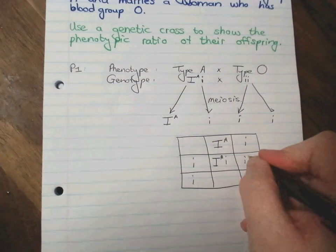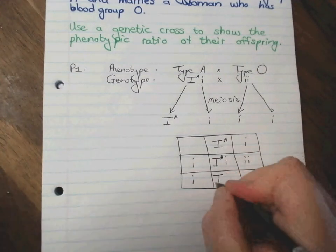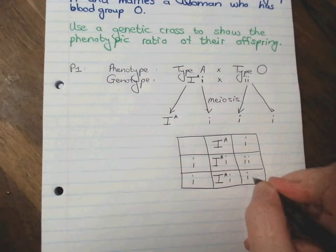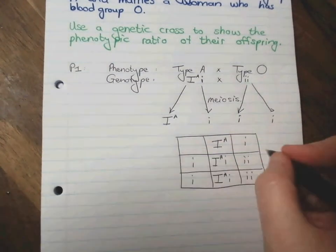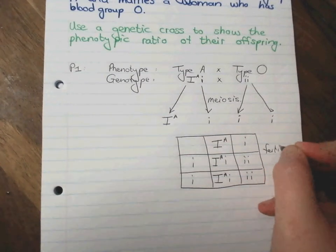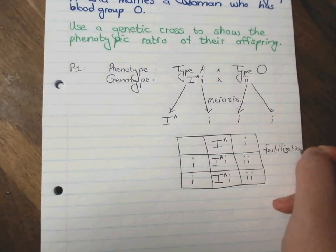And remember, it's always capital letters first and in alphabetical order. Right. And this putting together process is called fertilization.